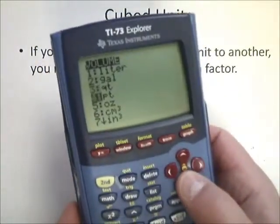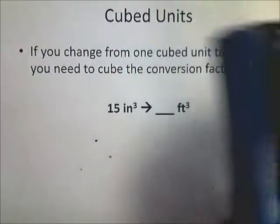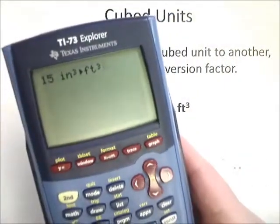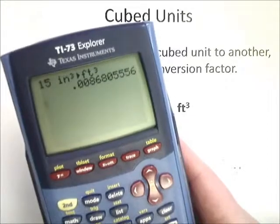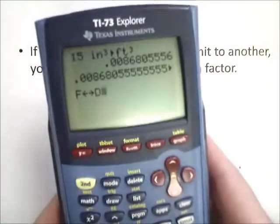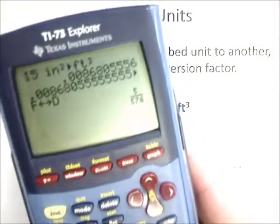We go into inches cubed, and then I need to convert that to feet cubed. It says it should be 0.0868, which is insanely small, but I'm going to write it anyway. If I change it to a fraction, 5 over 576.